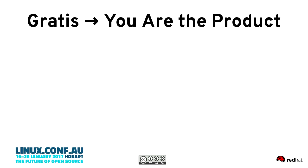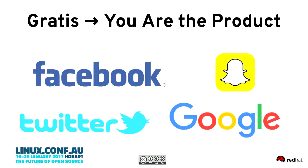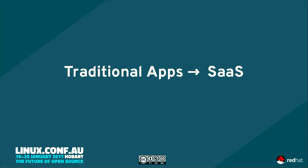All too often, when a service is gratis, you are the product. We all use Snapchat, Facebook, Twitter, and Google. Do any of you pay for those services? Most of these services, you're not paying for — you're a content generator, generating their data. You are the product to help pay for the service. As organizations shift from traditional on-premise applications to software as a service and service-driven models, there's more of that shift to you being the product, or it's harder to get access to the source code, or harder to get access to the data because it's now being offered to you as a service.